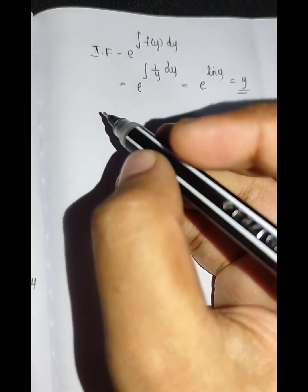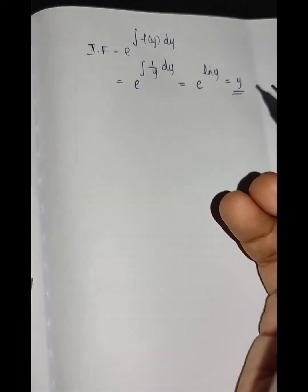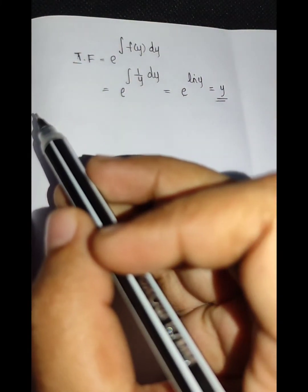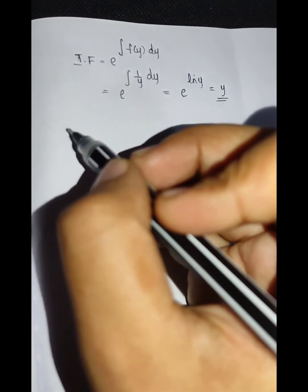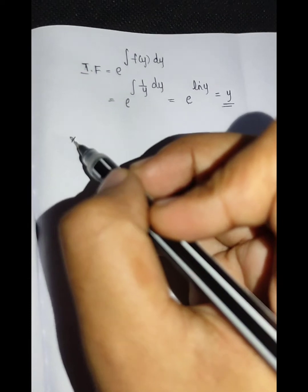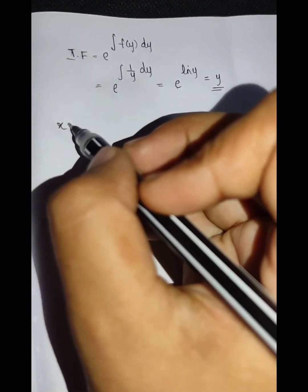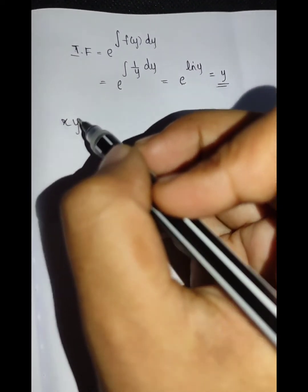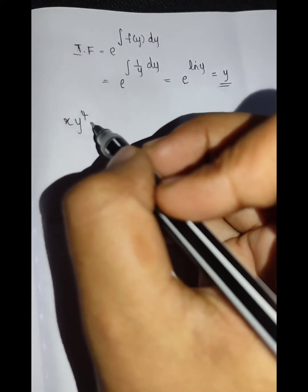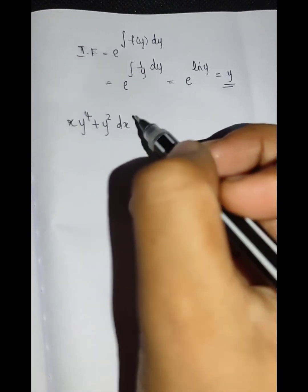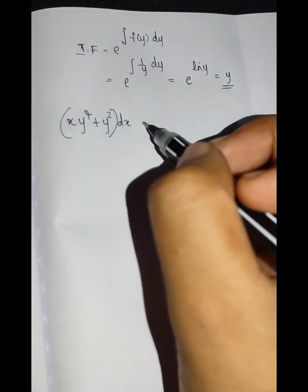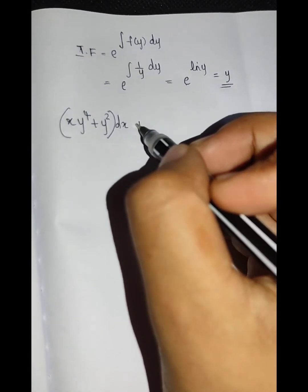We multiply the integrating factor y throughout the equation, giving xy⁴ + y² dx plus the corresponding dy terms.